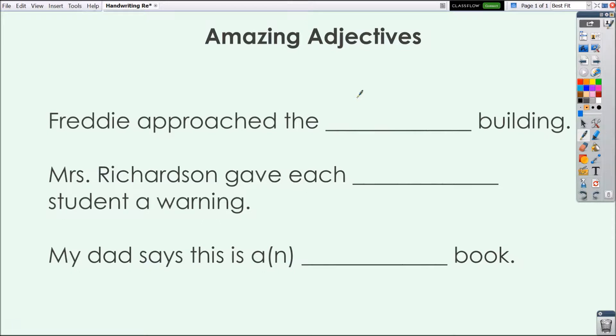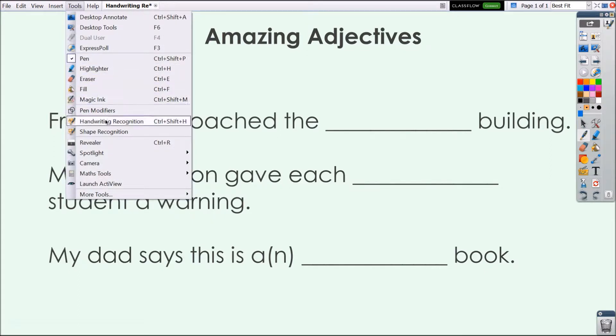The handwriting recognition tool in Active Inspire is perfect for teachers and students alike to make annotations more legible. To enable handwriting recognition, use the tools icon from your main toolbox or go to tools and select handwriting recognition.